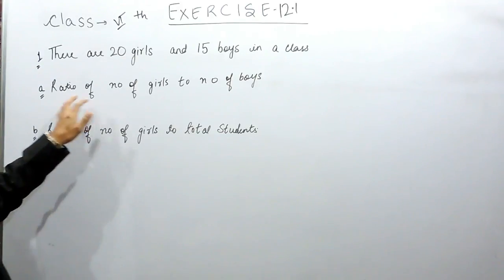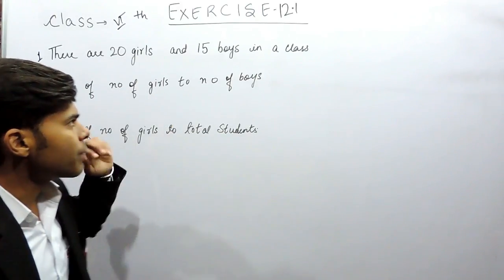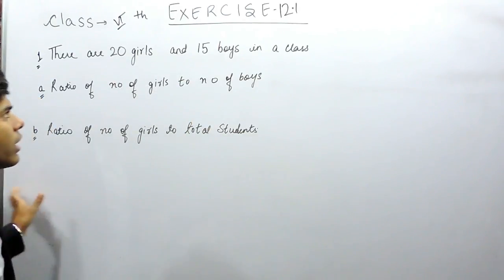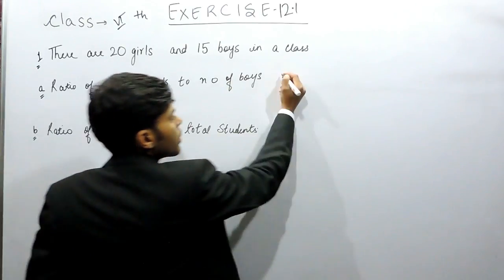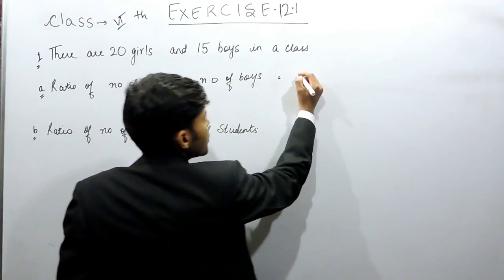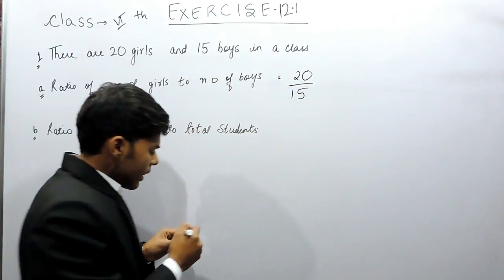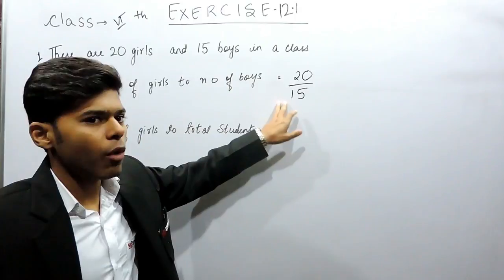So in part A it says number of girls to number of boys, means that number of girls will be in the numerator and number of boys will be in the denominator. So number of girls are 20, so that means 20 and number of boys are 15, so 20 by 15 and the ratio has to be always in its simplest form.